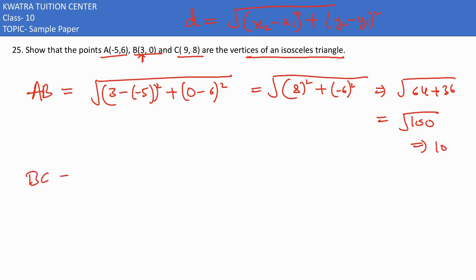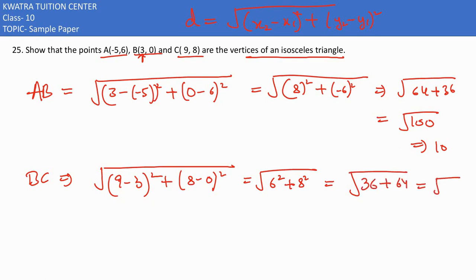Now I need to check BC. Any two must be equal to each other because we know in isosceles triangle, two sides are equal. BC would be 9 minus 3 whole square and then you have 8 minus 0 whole square. 9 minus 3 whole square is 6 square, 8 square. 6 square in this case is 36, 8 square in this case is 64. This is again root 100 and root 100 would be 10.